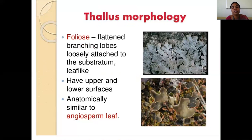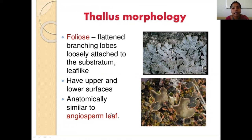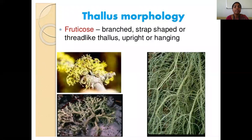The second type is foliose lichen. It is also flattened but has branching lobes attached to the lower surface. It has both upper and lower cortex. It forms a highly branched lobe-like structure with a basal substratum, and anatomically it is similar to an angiosperm leaf structure. This is how the foliose thallus morphology looks.